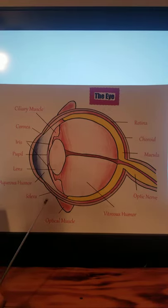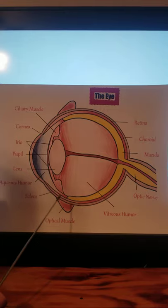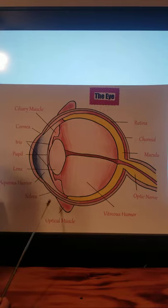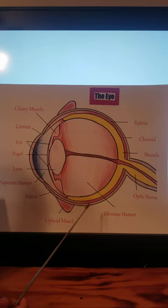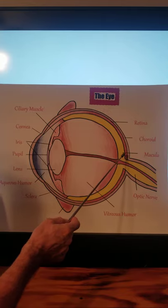The sclera is the opaque, fibrous, tough protective outer layer of the eye — the white part of the eye. The choroid functions to provide nourishment to the outer layer of the retina through blood vessels.